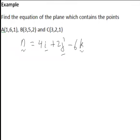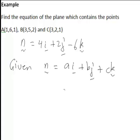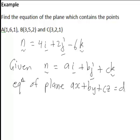Now the next step is a very general principle: if we're given a normal vector to the plane of form ai plus bj plus ck, then the equation of the plane will have the form ax plus by plus cz equal to some constant d.